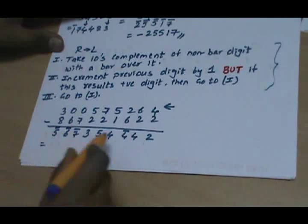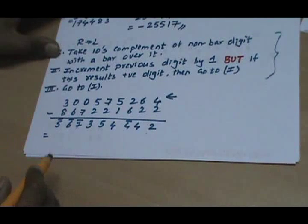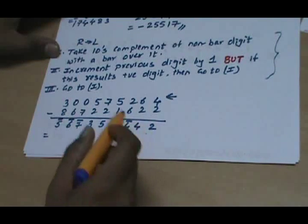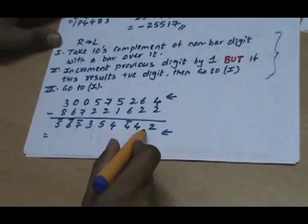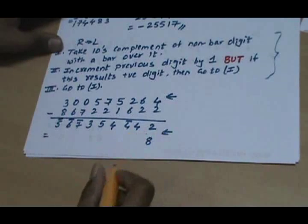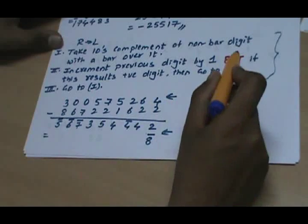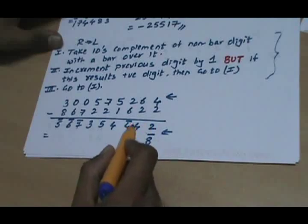We also get 5̄ and 3 minus 8 gives 5̄. As observed, this is a win-column number, but it is a special kind because the first digit itself is a win-column digit. So we need to convert all positive digits to negative digits using the method we have seen. We use the same method — go from right to left, take 10's complement of the non-bar digit. 10's complement of 2 gives 8̄. We increment the next digit, which comes as 5 — and since it is positive we go to step 1 without writing anything.